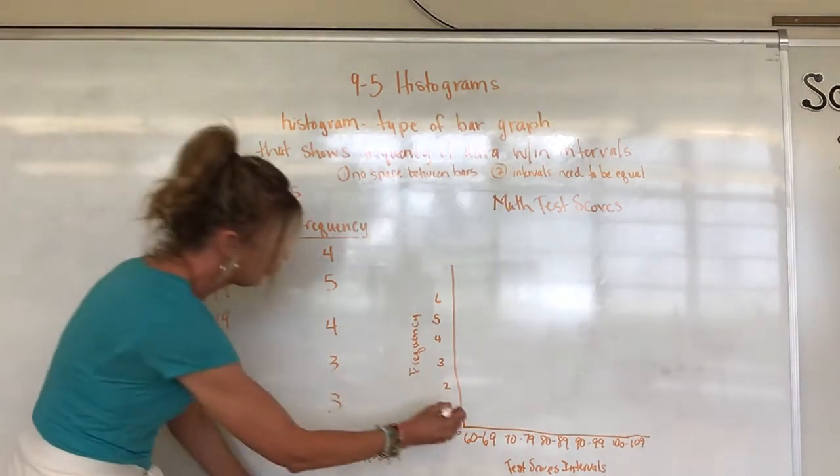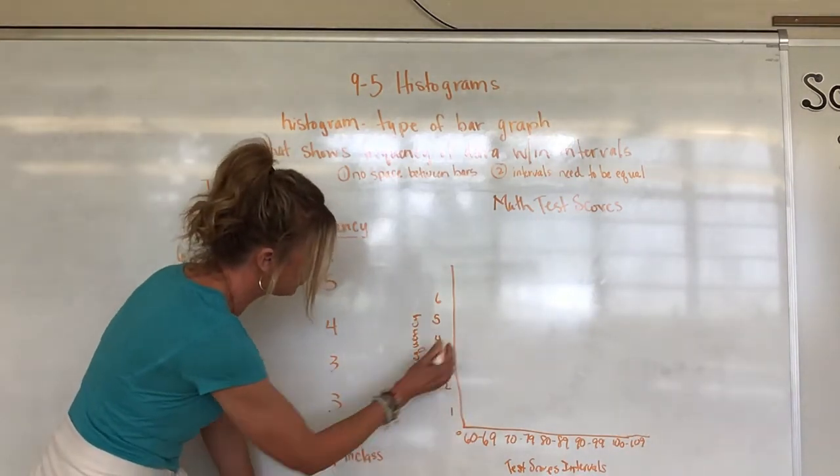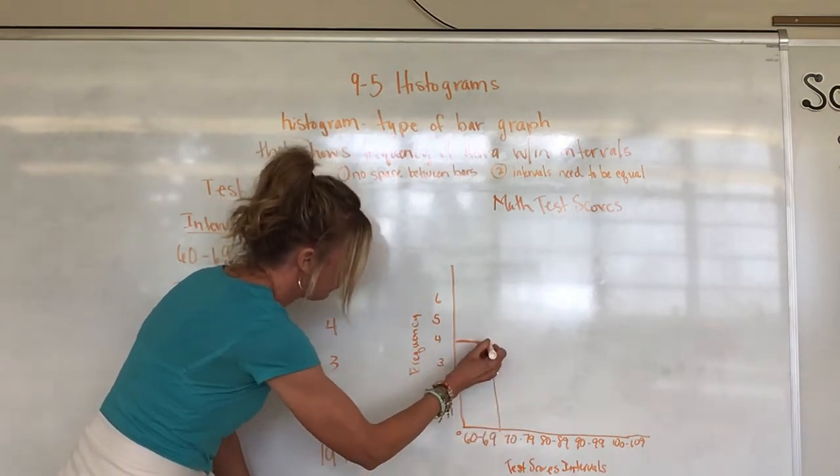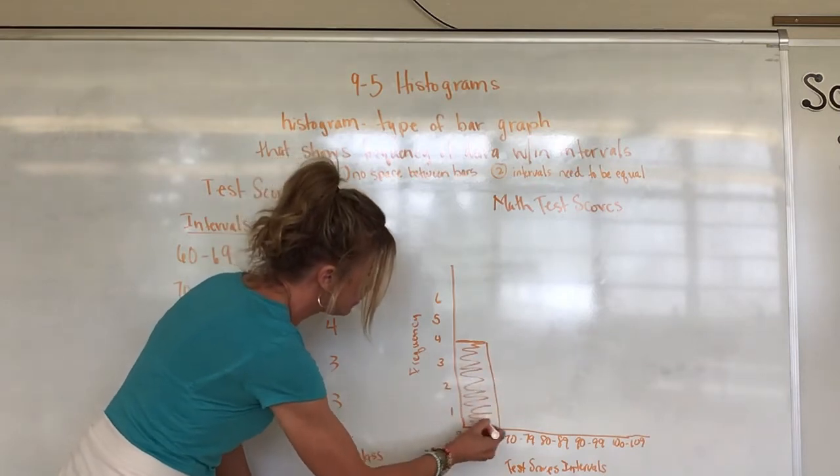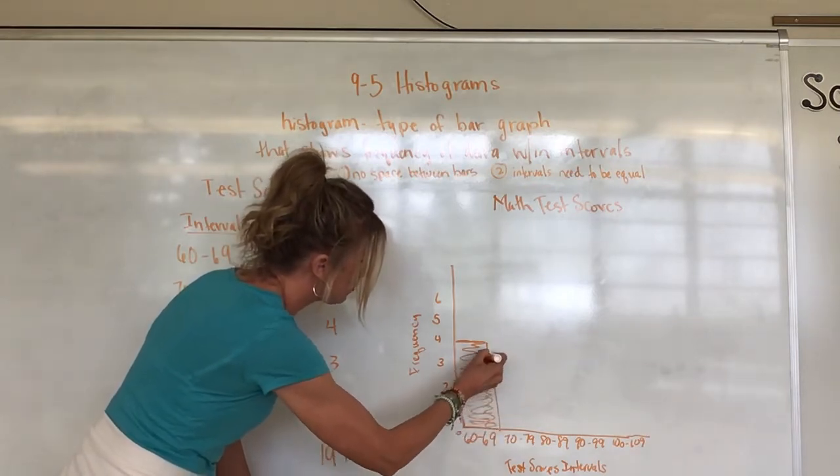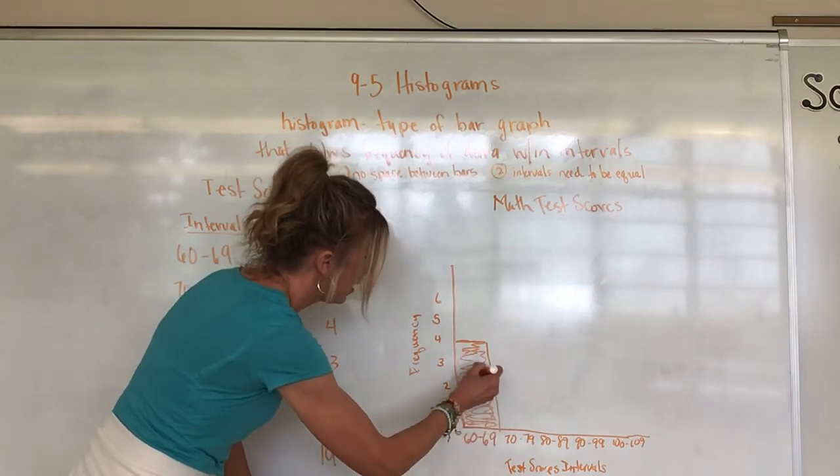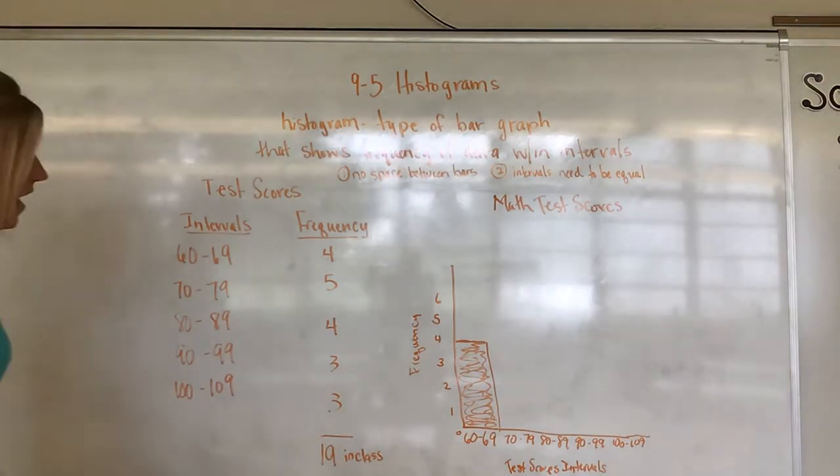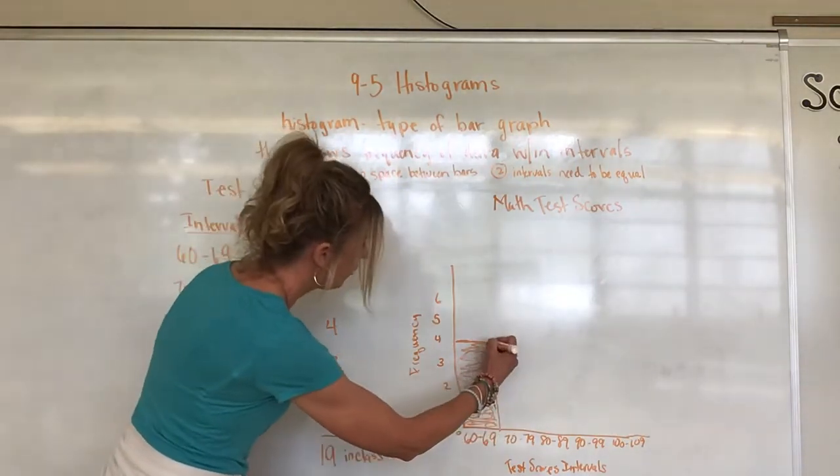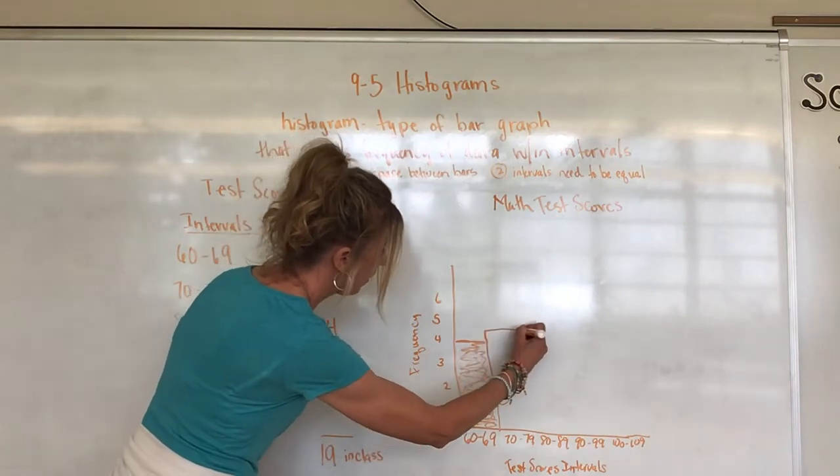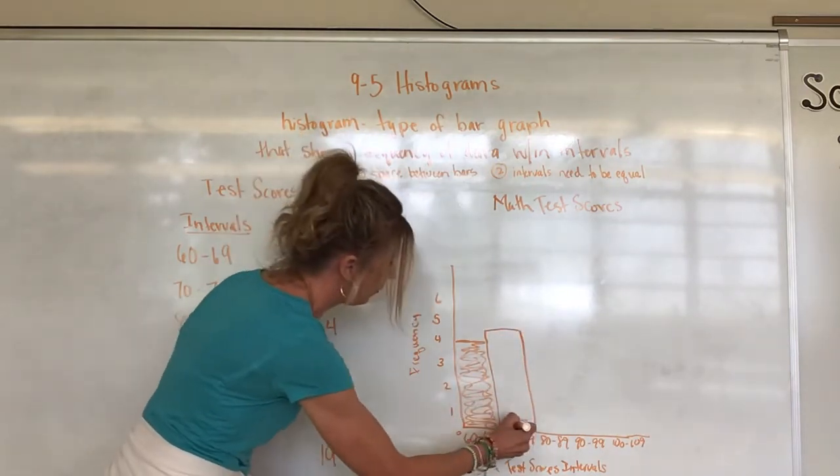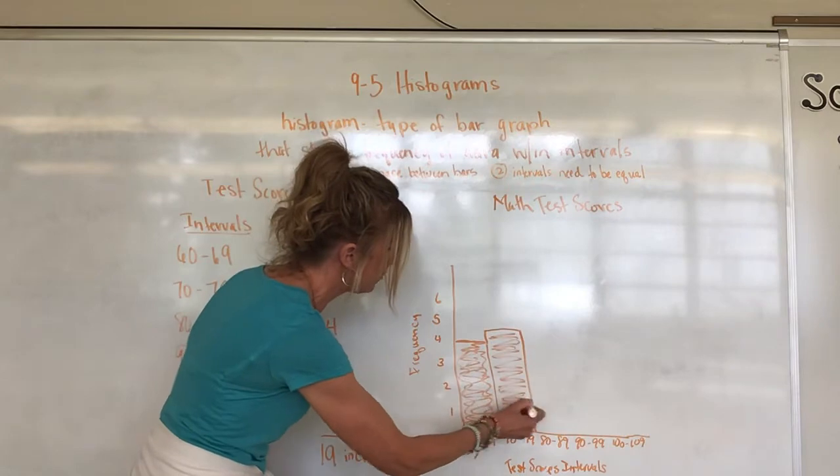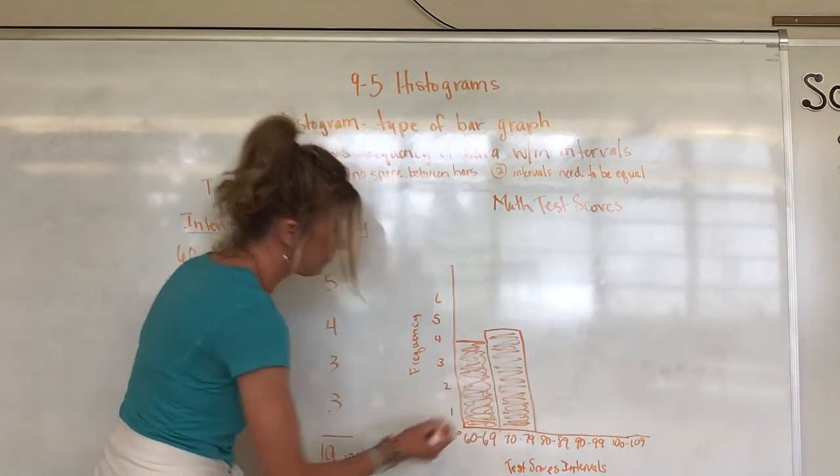Up here, we're going to say this is math test scores. Now let's go back and let's look at 60, 69. There was four. So we're going to come up. Remember this is the frequency side. We're going to come to four and then we're going to create our bar. Then we would just color this in. Kids in the past when we do this math assignment, we see some amazing, beautiful colors. Then we go to 70, 79. That's a five. So we can just come up to the five, come down. And remember, we're not leaving any space between our bars because this is a histogram, doesn't have space. So they're just right beside each other.